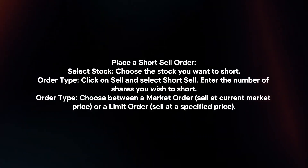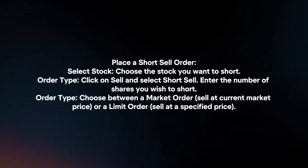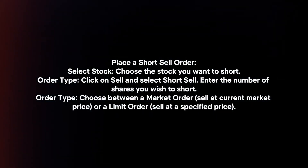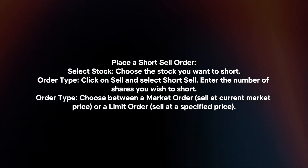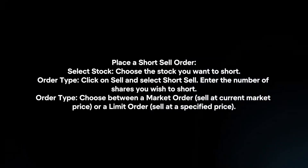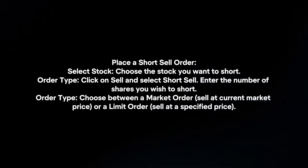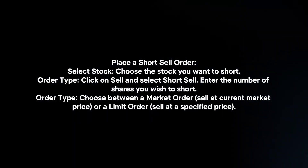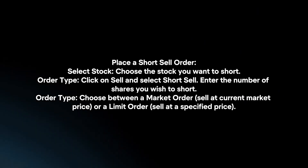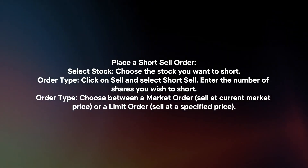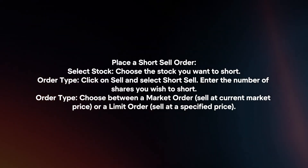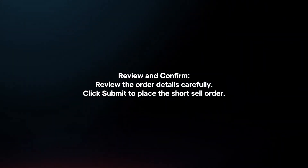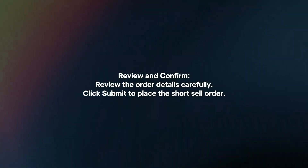Place a short-sell order. Select the stock you want to short. For order type, click on sell and select short-sell. Enter the number of shares you wish to short. Choose between a market order or a limit order. Review the order details carefully, then click submit to place the short-sell order.